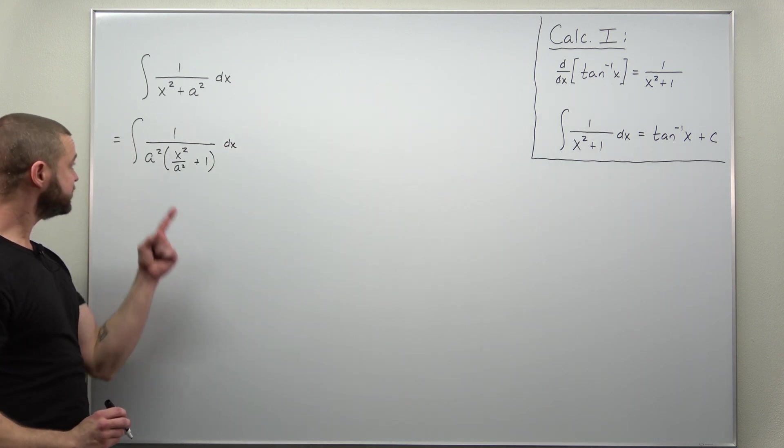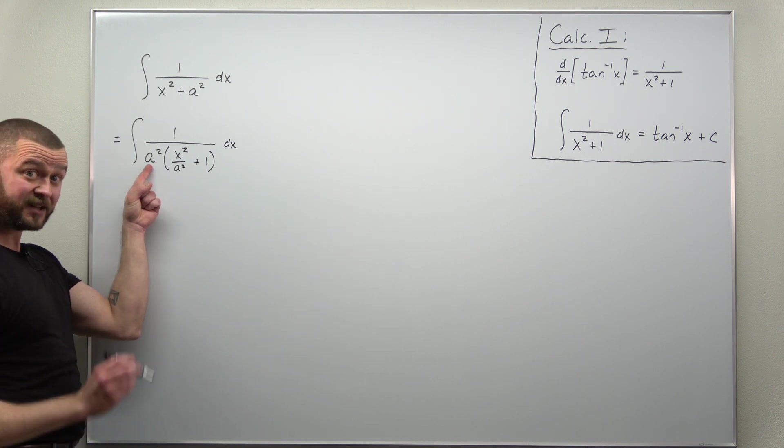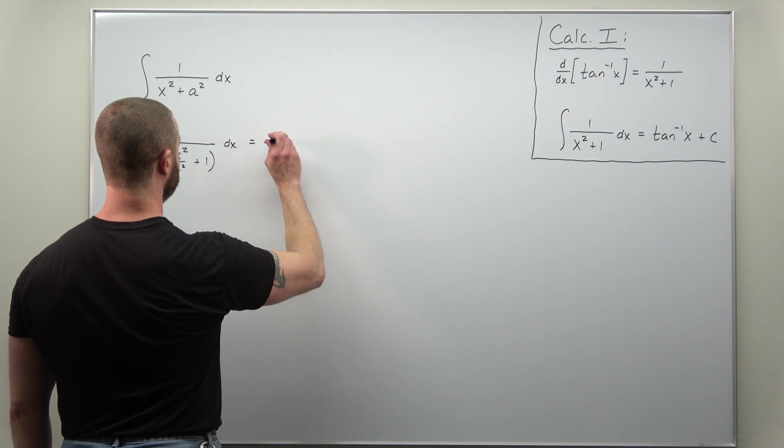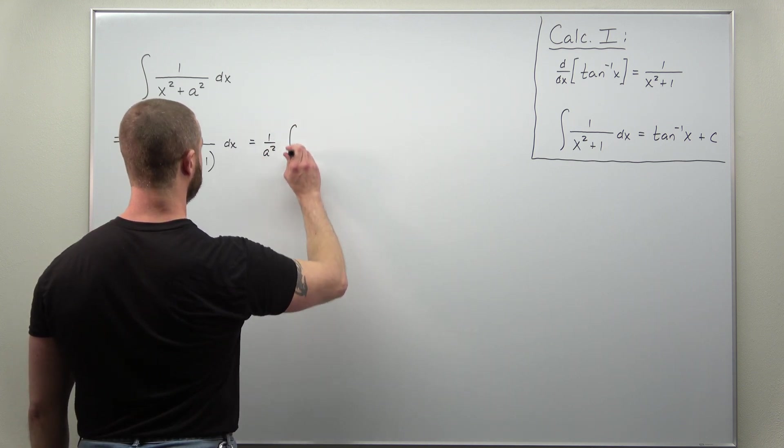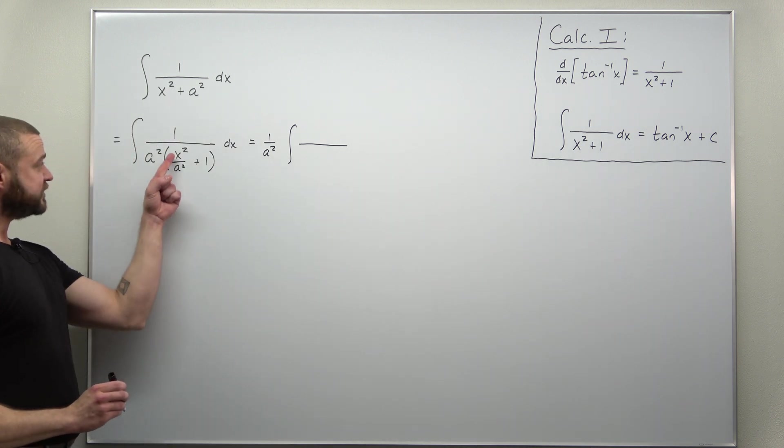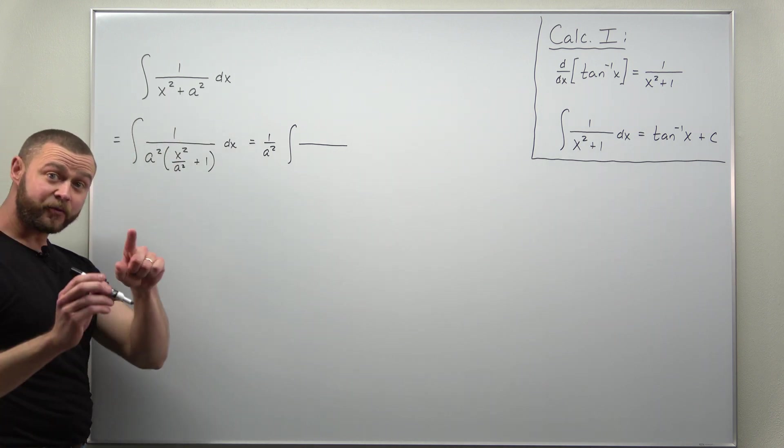All right, I'm going to do two things. I can pull this constant a squared in the denominator out front as 1 over a squared.